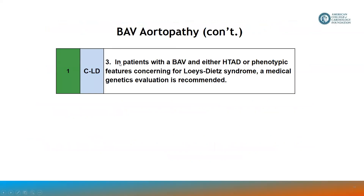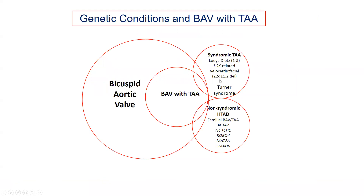The guidelines also address the importance of looking for genetic aortopathy amongst those with bicuspid valve disease. Those with bicuspid valve and a heritable thoracic aortic disease in the family, or phenotypic features concerning for Loeys-Dietz syndrome, should receive a medical genetics evaluation. In the population with bicuspid valve, some have aneurysm disease; of those, some are syndromic — like Loeys-Dietz — and other genes can relate to bicuspid valve and aneurysm disease. Turner syndrome associates with BAV in about 30% of Turner women.